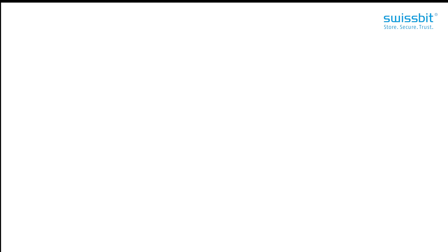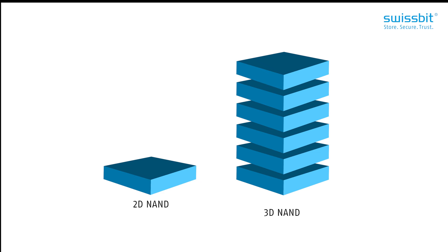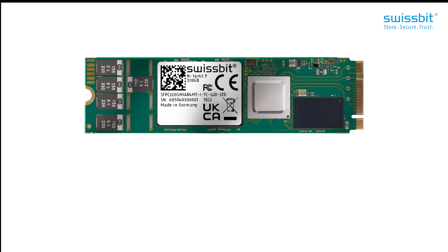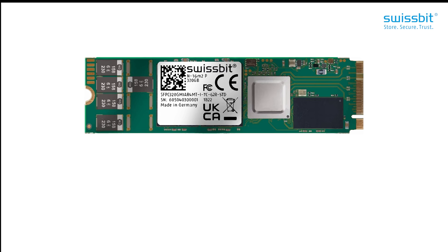Well over a decade now, we moved from horizontal planar 2D NAND flash to vertical 3D NAND flash. This allowed manufacturers to physically use more space on a wafer by using the third dimension. That means we now see storage modules using PSLC mode based on 3D TLC, for example.